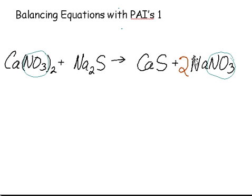Let's look at the other elements. We have two Na's on the right, two Na's on the left. One calcium on the left, one calcium on the right. One sulfur on the left, and one sulfur on the right. So our equation is now balanced.